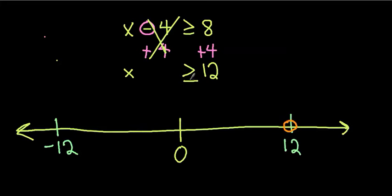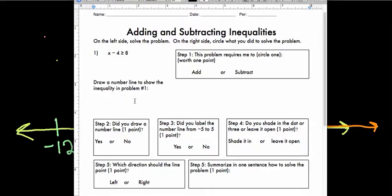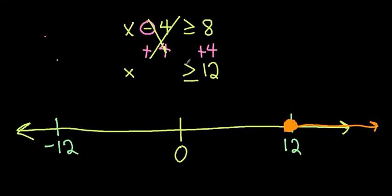When it's equal to, you shade the dot in. If there was no equal to sign, you would not shade it in — but since there is an equal to sign, we shade it in. We draw our arrow in whatever direction the inequality symbol is pointing, so my arrow is going to go to the right. If your answer was x is greater than or equal to 16, you'd put 0 in the middle, 16 to the right, negative 16 to the left, and draw the arrow to the right.